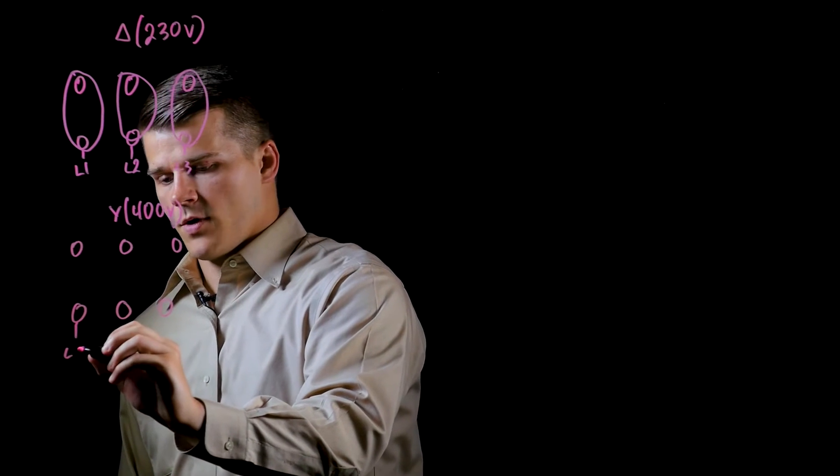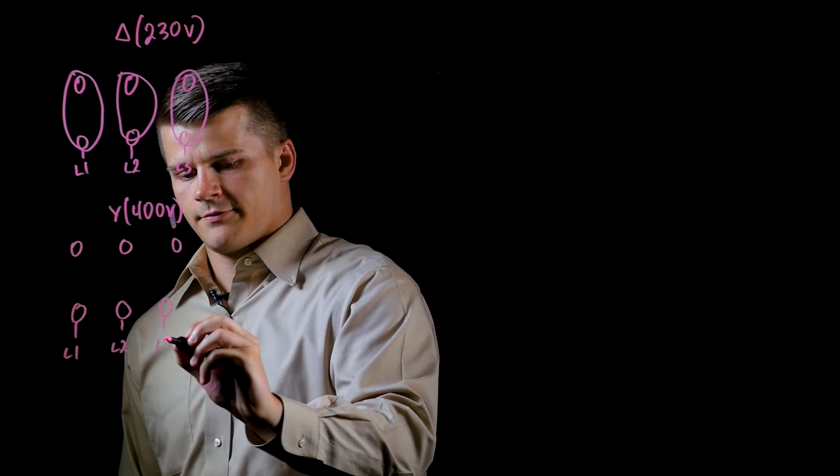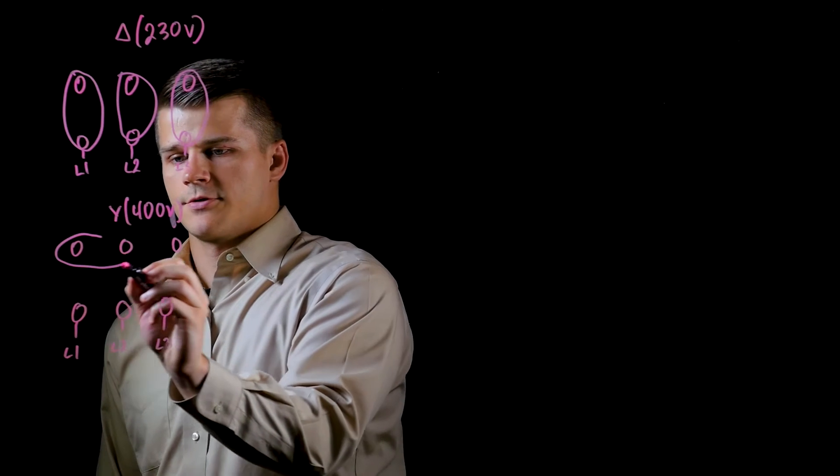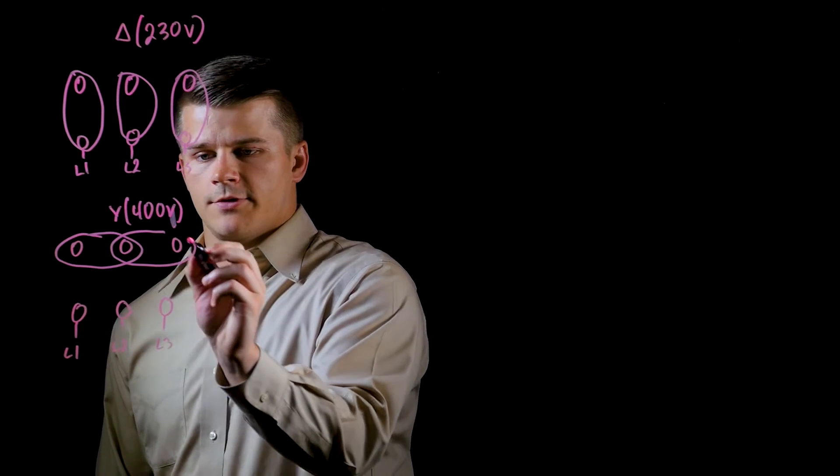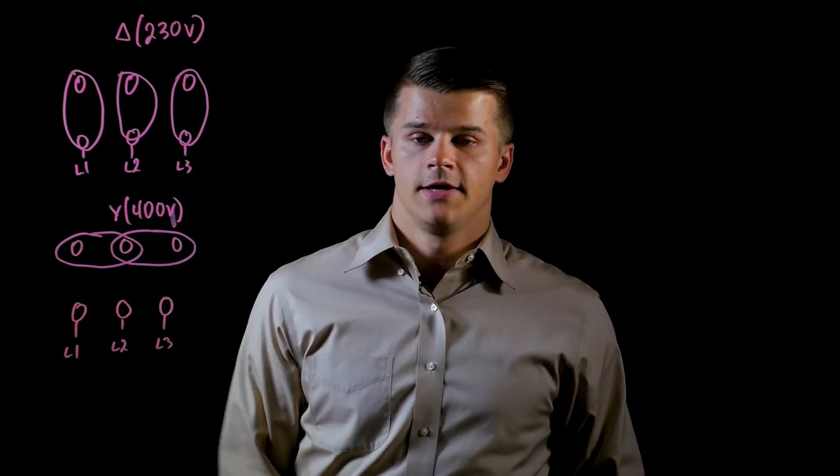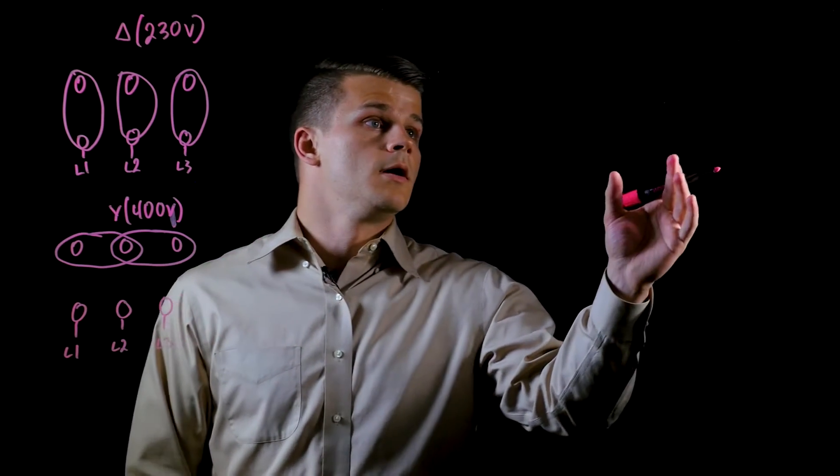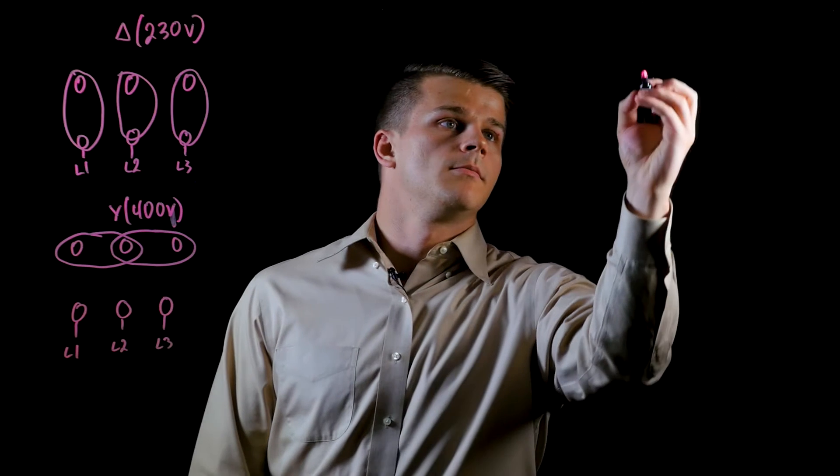Same thing on the Y: you have L1, L2, and L3, except this time we jump across here and here. This would be your Y configuration for 400 volts. Again, these are for 50 Hertz that we'll be talking about, but there are some 60 Hertz models out there.